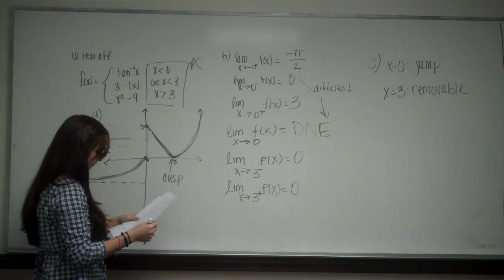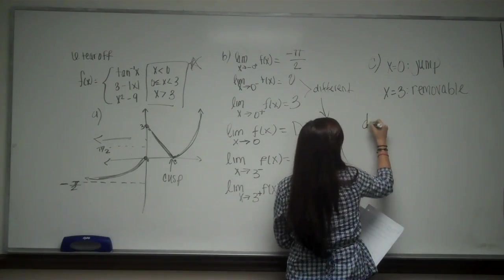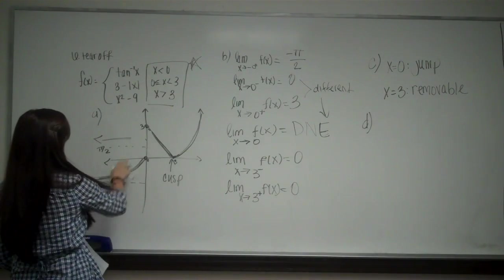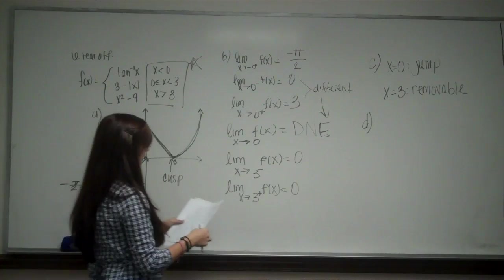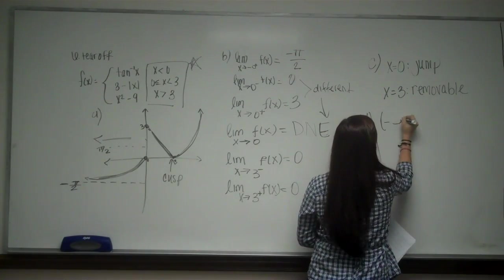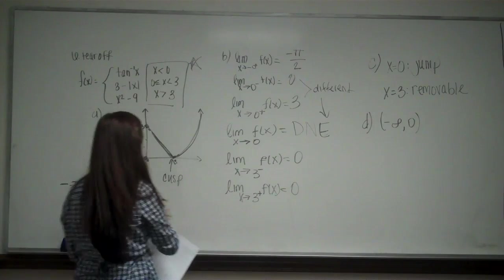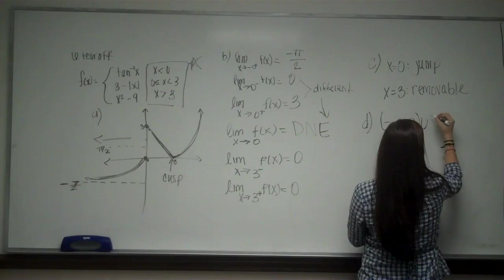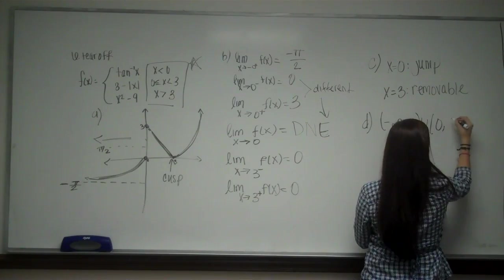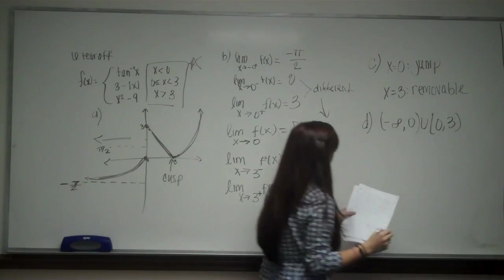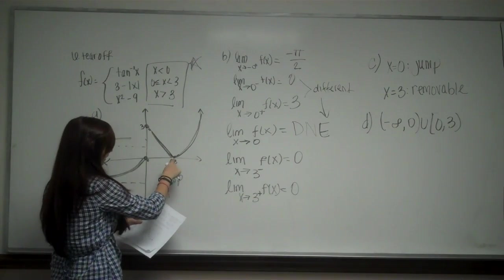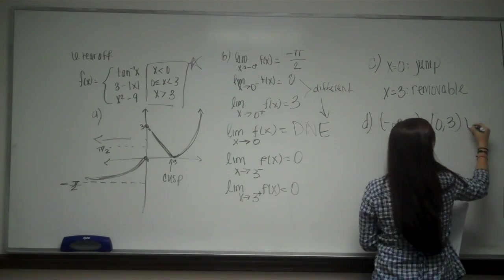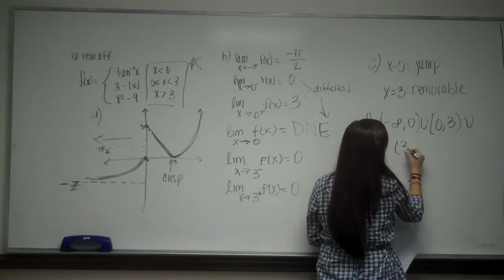And then part D says to find each interval on which f of x is continuous. So we're going to look at our continuous intervals. And that is going to be from negative infinity to 0 because from here to here it's continuous. But then I have a jump. So I'm going to be going from 0 to 3. And then I have a discontinuity so it's not continuous.